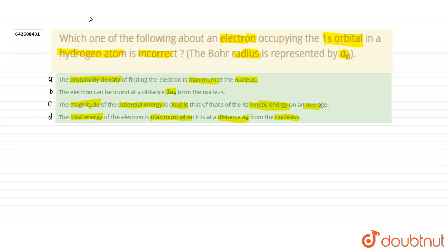First, we take statement first. This is about probability density. And the sign of probability density is psi square.